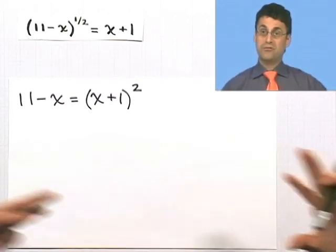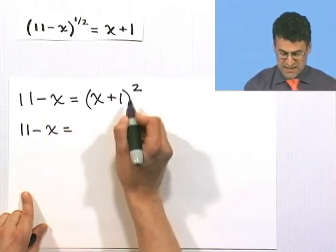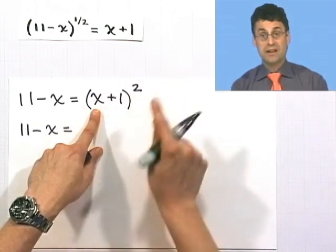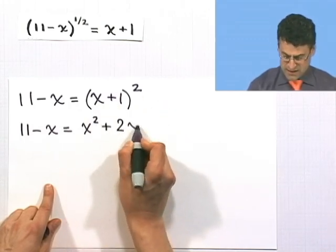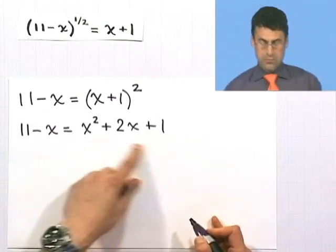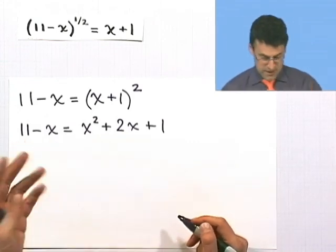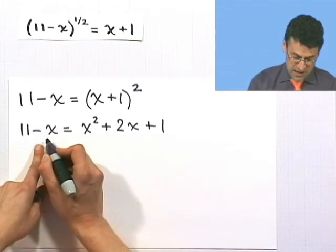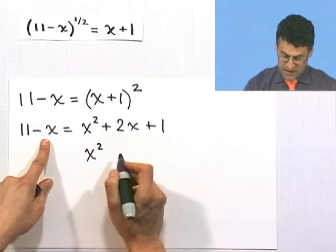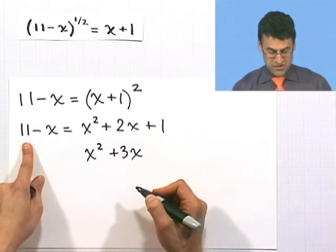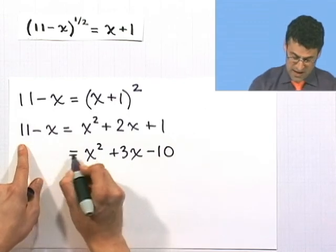I want to get everything undone, so I'll foil things out and then see if I can factor. I have 11 minus x equal to (x plus 1) squared. Expanding: x times x is x squared, the inside term is x, the outside term is x — that's 2x total — and 1 times 1 is 1. So I get x squared plus 2x plus 1. Bringing everything to the right-hand side: adding x to both sides gives x squared plus 3x, and subtracting 11 from both sides gives minus 10, so x squared plus 3x minus 10 equals 0.